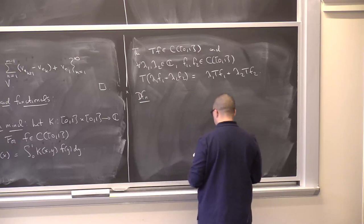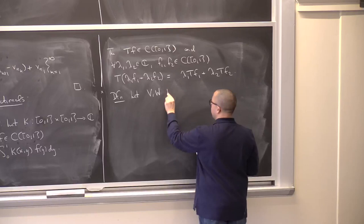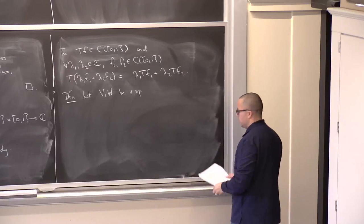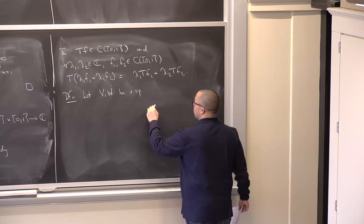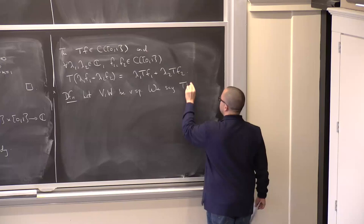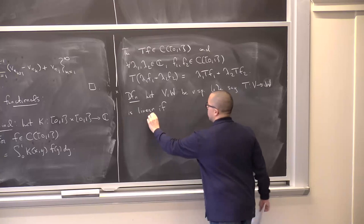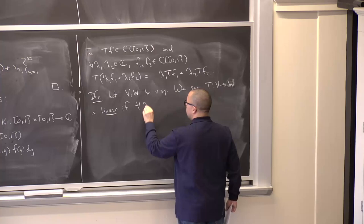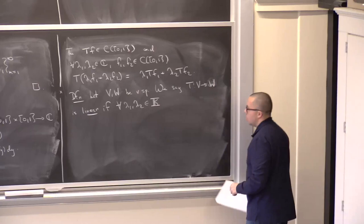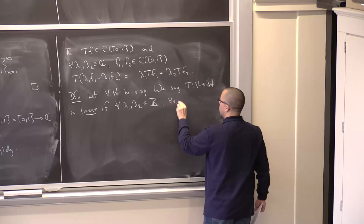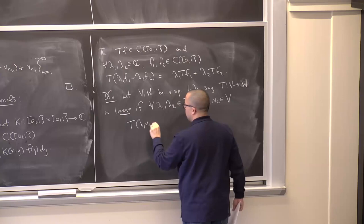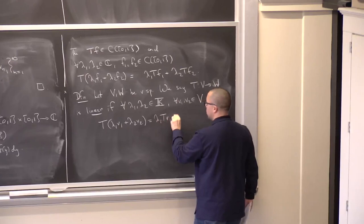Definition: let V and W be vector spaces. A map T from V to W is linear if for all scalars λ_1, λ_2 in R or C and all v_1, v_2 in V, T(λ_1 v_1 + λ_2 v_2) = λ_1 T(v_1) + λ_2 T(v_2). Given two normed spaces, a linear map between them I will most often refer to as a linear operator rather than linear transformation.